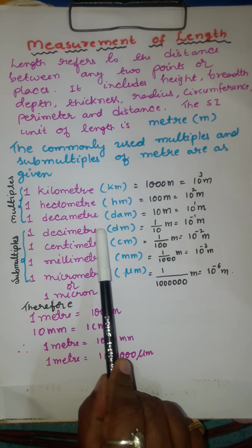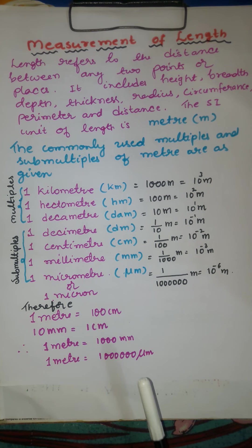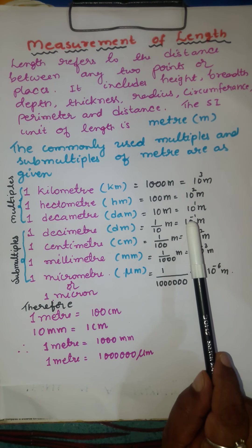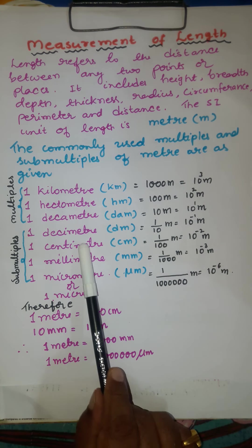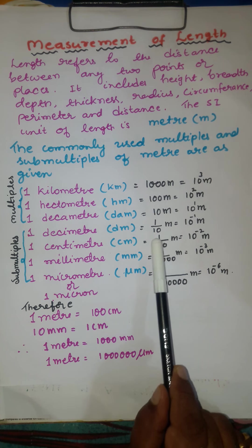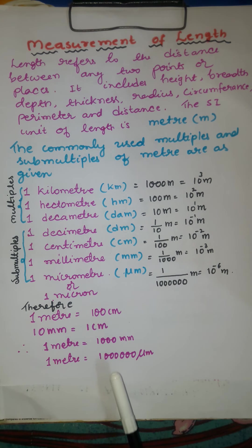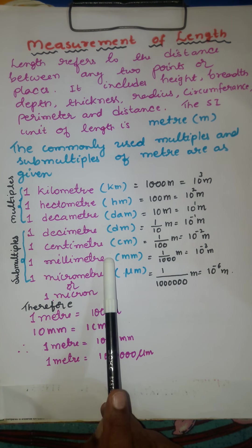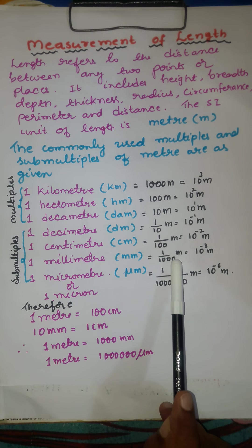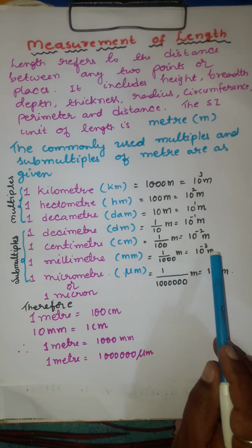1 decimeter: when a meter is divided into 10 parts, each part is called a decimeter — 10 to the power of minus 1 meter. 1 centimeter: one hundredth of a meter; when a meter is divided into 100 parts, each part is known as a centimeter — 10 to the power of minus 2 meter. 1 millimeter: when 1 meter is divided into 1000 parts, each part is known as a millimeter — 10 to the power of minus 3 meter.